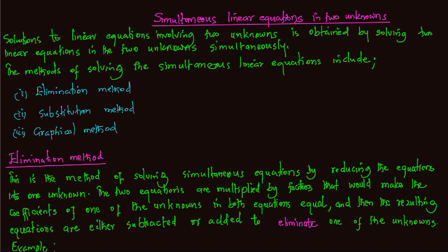Elimination method. This is the method of solving simultaneous equations by reducing the equations into one unknown. The two equations are multiplied by numbers that would make the coefficient of one of the unknowns in both equations equal. Then the resulting equations are either subtracted or added to eliminate one of the unknowns. For example: